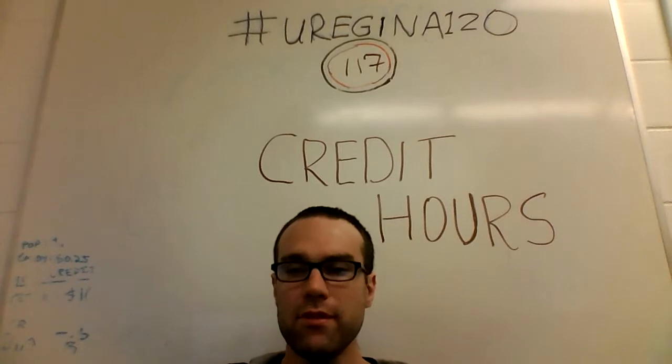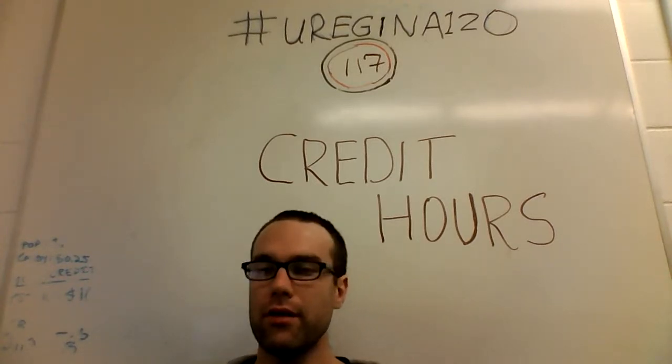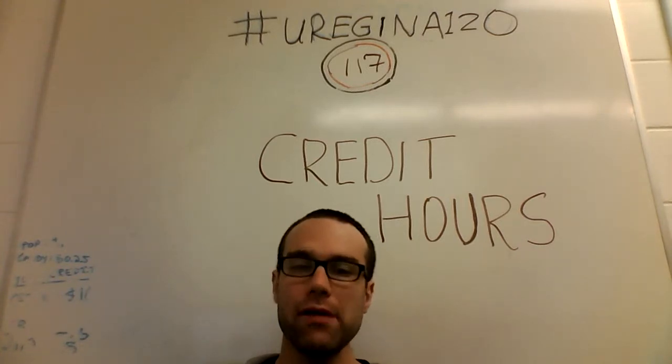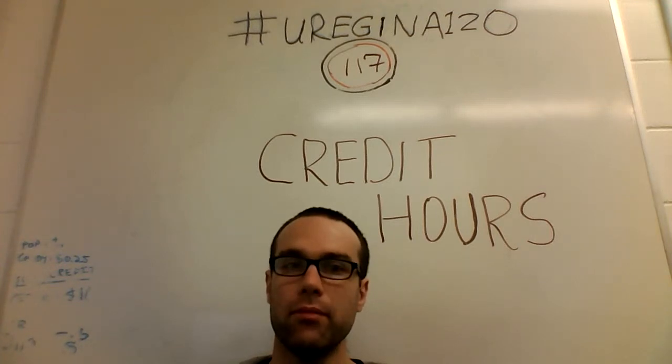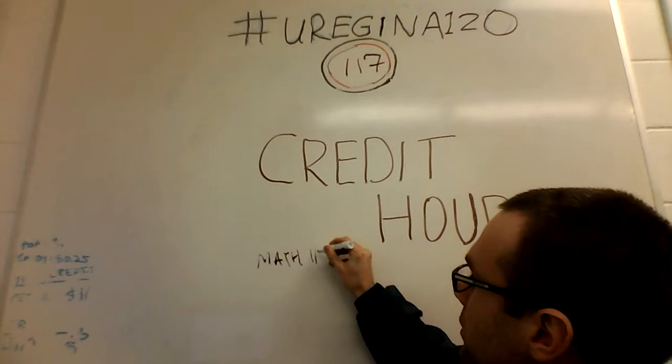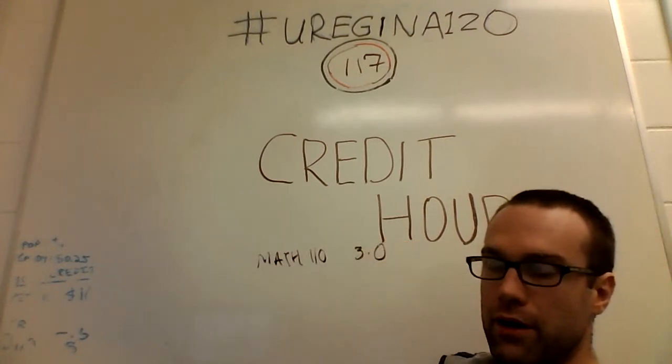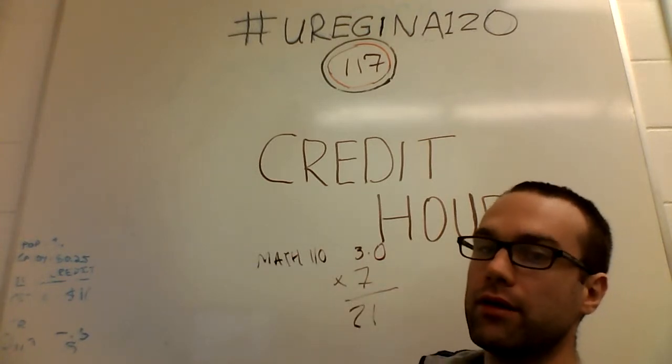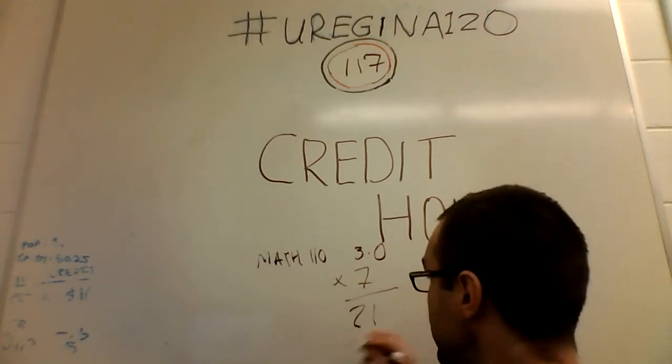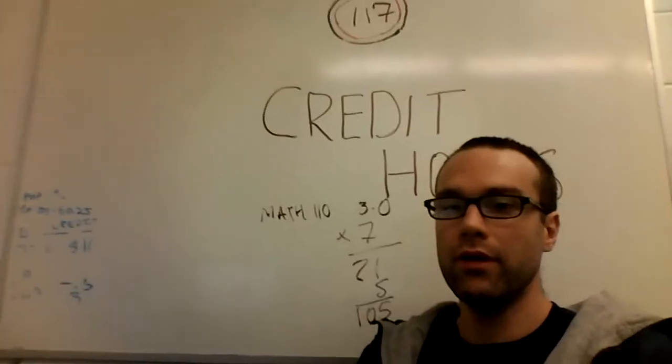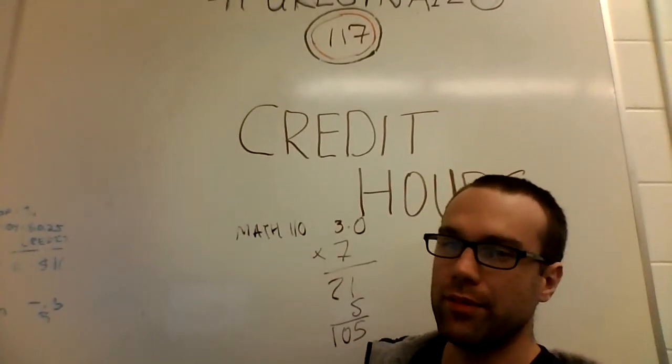It seems that the university itself takes about, and it varies from class to class a little bit, but roughly one hour per credit hour per day. So if you have a three credit hour class, like for example Math 110, three credit hours times seven days a week, 21 hours a week is one class. Five classes, that's 105 hours. Give or take. You might be able to get away with a little bit less, but not much.